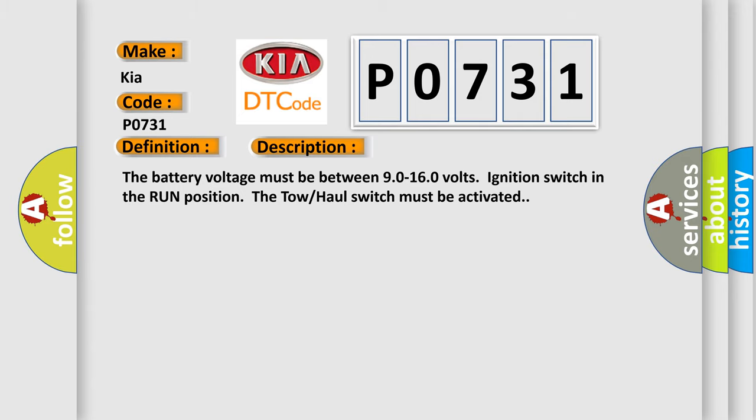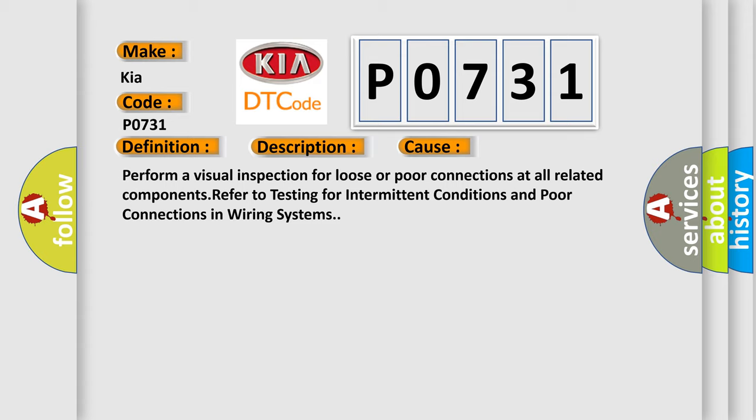This diagnostic error occurs most often in these cases. Perform a visual inspection for loose or poor connections at all related components, refer to testing for intermittent conditions and poor connections in wiring systems.